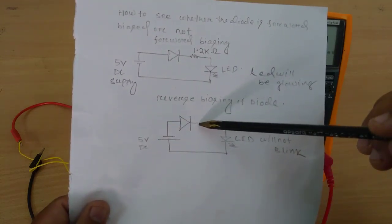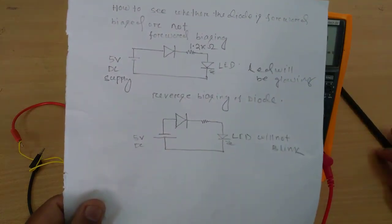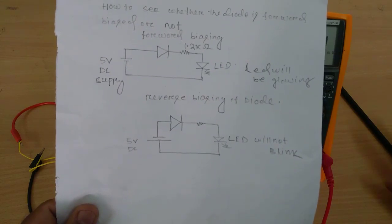Here it would be getting open circuited so no current can flow in this loop so the LED will not blink or will not glow.